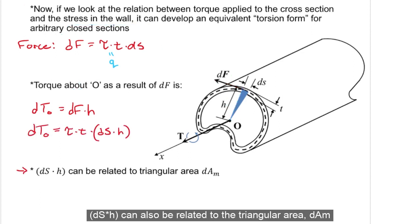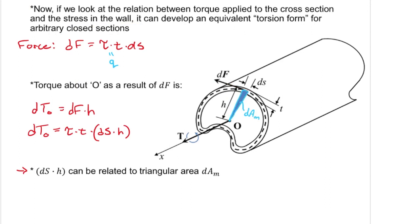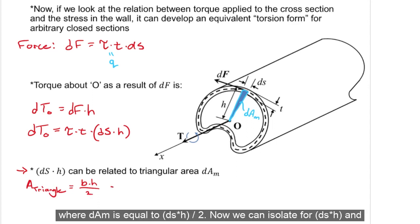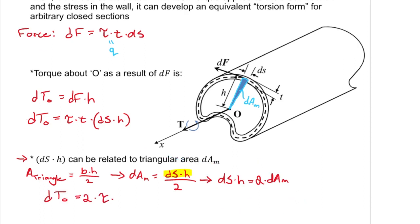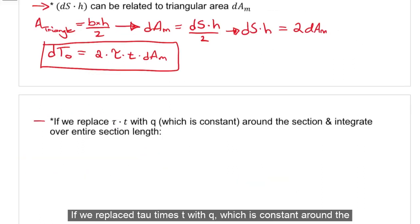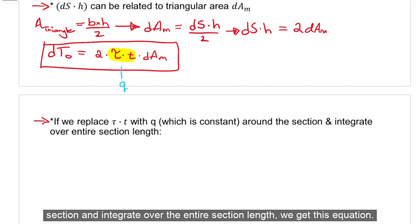dS times H can also be related to the triangular area dAM, where dAM is equal to dS times H divided by 2. Now we can isolate for dS times H and plug our equation back here and we'll end up with this. If we replace tau times T with q, which is constant around the section, and integrate over the entire section length, we get this equation.